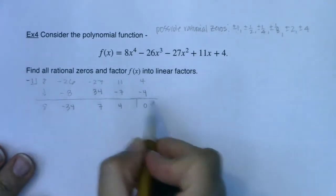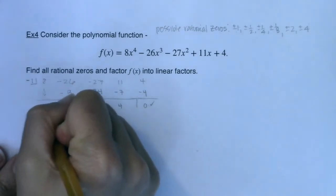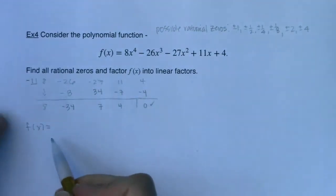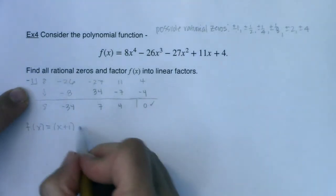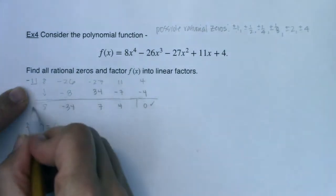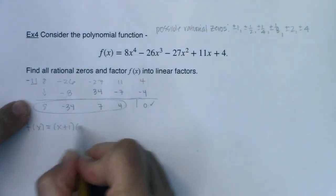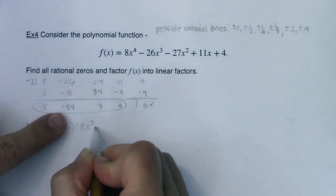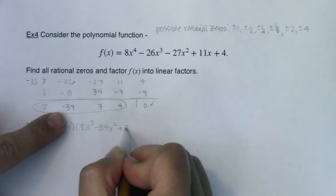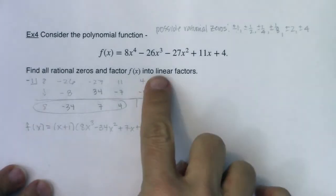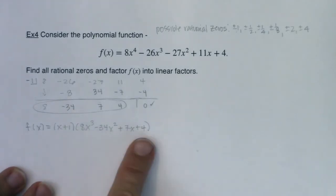If negative one is a zero, because f of negative one is zero, I can break down my polynomial. From the factor theorem, I know if negative one is a zero, that x plus one had to be a factor. And the remaining factor shows up here with synthetic division. So I started with an x to the fourth, I'm down one power. So we'll go 8x³ - 34x² + 7x + 4. I need to get it into linear factors. This is a linear factor and a cubic factor, so I'm not there yet.